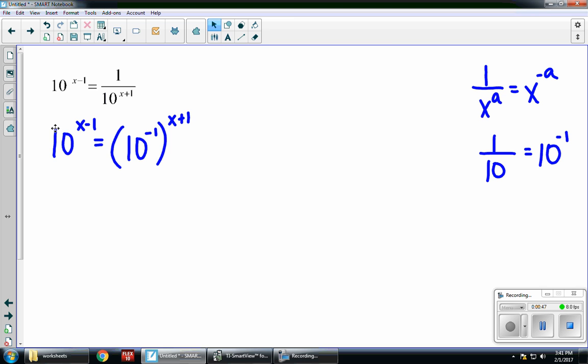Now, a power to a power tells me to multiply. So I'm going to distribute this negative 1 to each piece. The left side stays. The right side is 10 to the negative x minus 1.